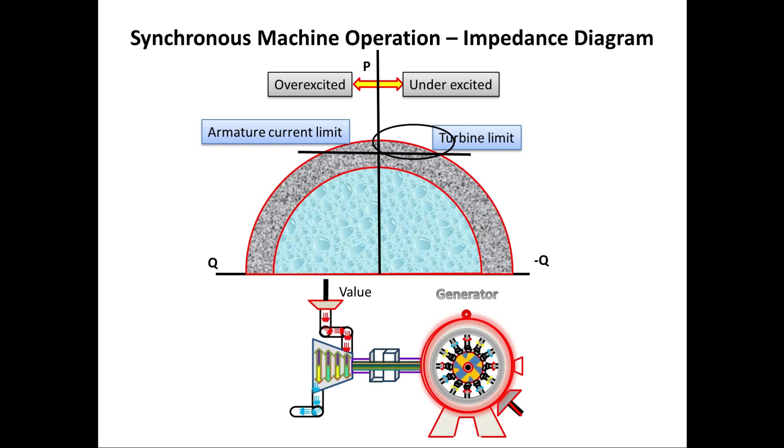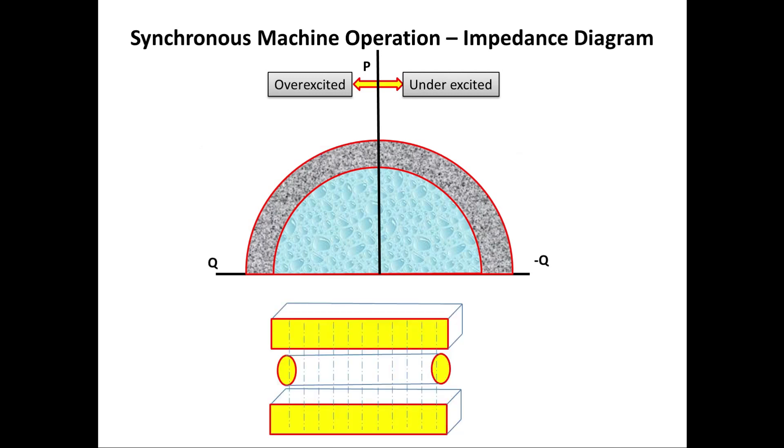Now we will see other condition. Let us consider the generator running in under excitation. During this case the generator will go on leading power factor. So we all know on leading power factor will have the high voltage. This leading power factor on stator. So the voltage is high on the stator winding.